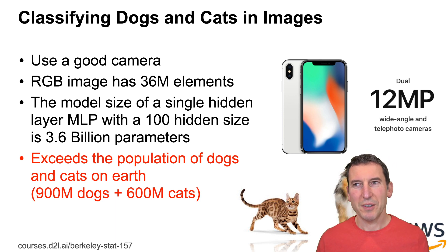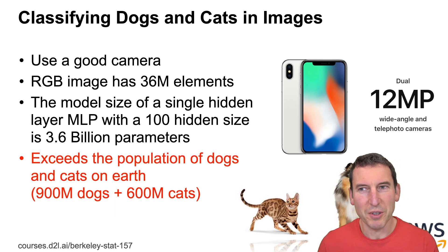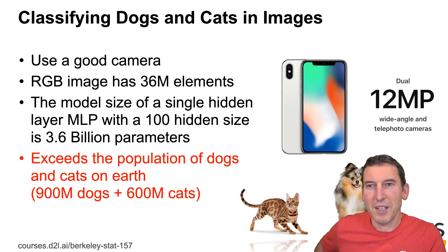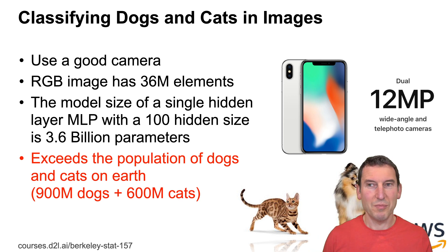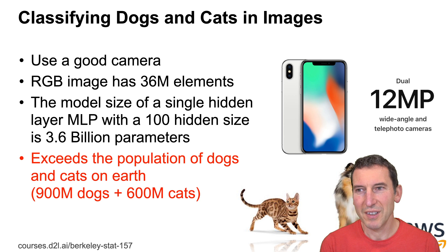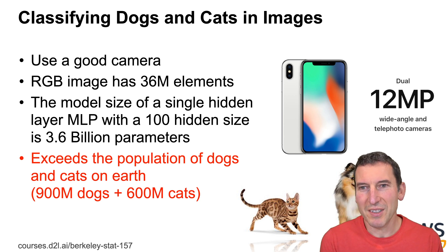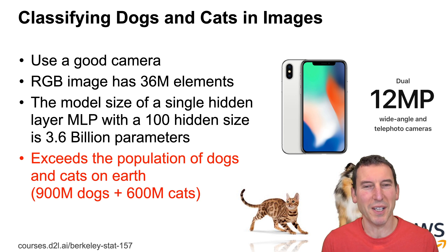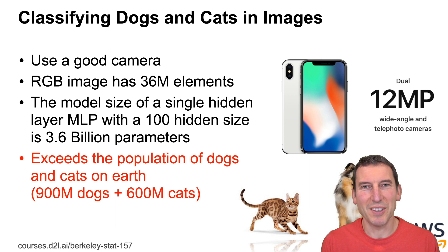Let's say we want to classify dogs and cats in images, and we have a good camera. Your cell phone probably has a 12 megapixel camera, and fancier phones have up to 48 or 64 megapixels — that's monstrous. As such, the model size of a single hidden layer multi-layer perceptron with maybe 100 hidden units might be 3.6 billion parameters. In fact, the population of dogs and cats is on the order of 900 million dogs and 600 million cats.